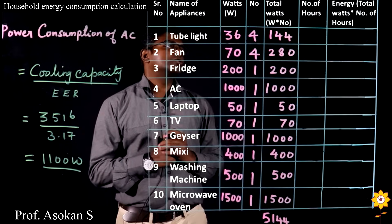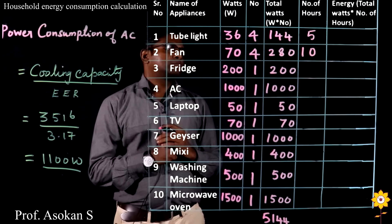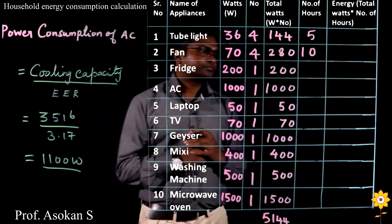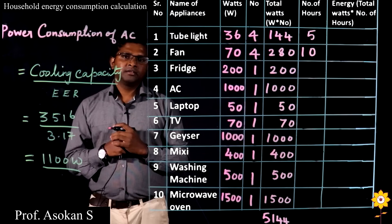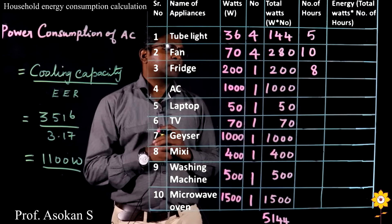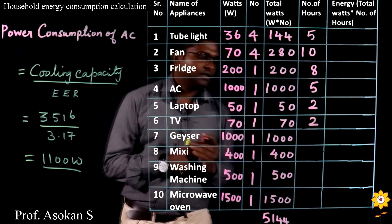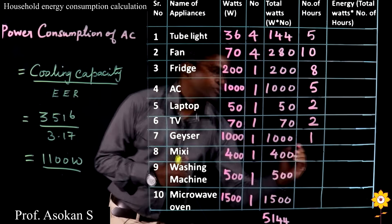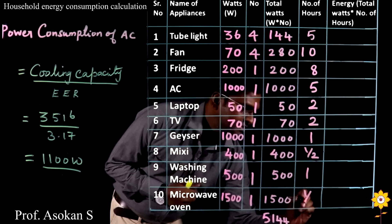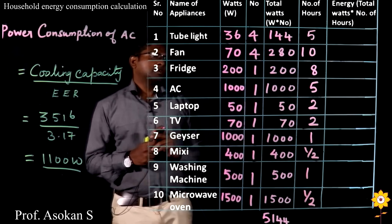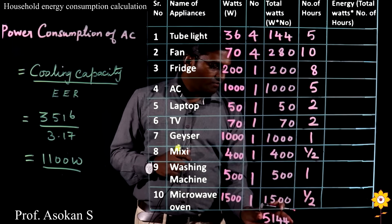Then we note the number of hours of use. I consider using tube light for 5 hours, fan for 10 hours, fridge for 24 hours — but the duty cycle of the fridge is 30%, meaning out of 24 hours only 8 hours the compressor will run, so I take 8 hours. AC I consider 5 hours per day, laptop 2 hours, TV 2 hours, geyser 1 hour, mixie half an hour (30 minutes), washing machine 1 hour, and microwave 1 hour. This will vary depending on the user.